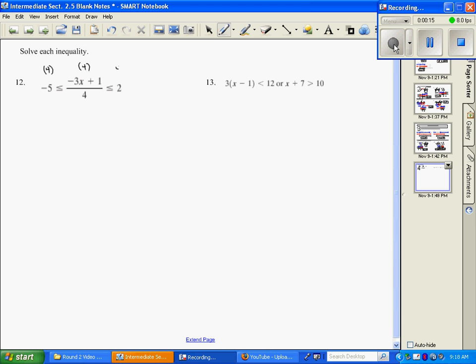If I multiply every term in the problem by 4, then I get negative 20. This 4 is going to cancel with that 4, so I just have negative 3x plus 1 is less than or equal to 8.